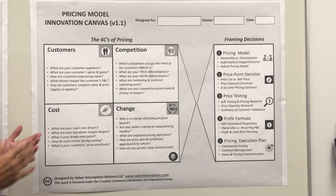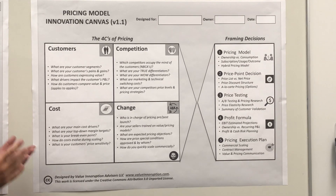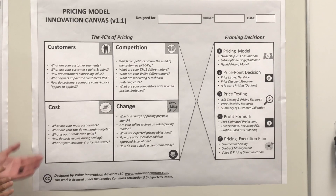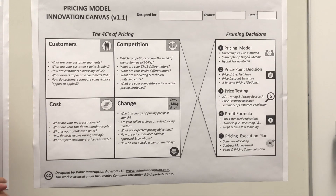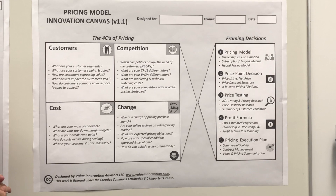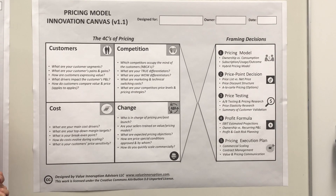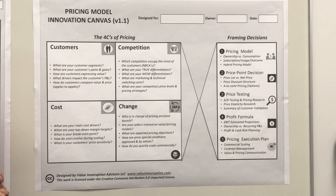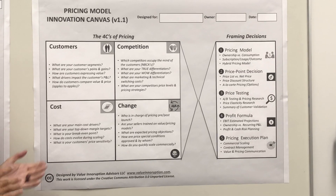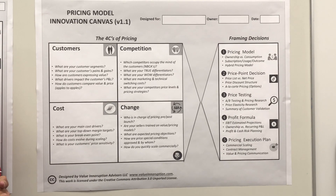On the cost side, you're going to look at the cost drivers, what are your top-down targets from top management, what are the breakeven points you are considering, how do costs evolve during the scaling of the commercial launch and after the commercial launch, and what is your customer price sensitivity — which is essential.